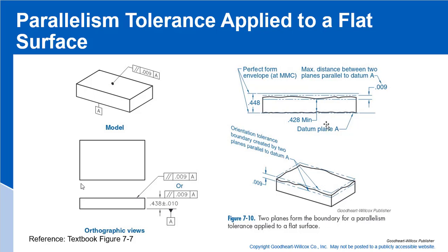The orientation tolerance for parallelism does not extend up to the perfect form boundary — it's based on where the high and low points of the measured surface are. This gives us the nine thousandths tolerance zone within which all surface elements must lie between the two planes. That's the tolerance zone created by a parallelism tolerance.